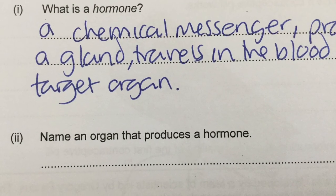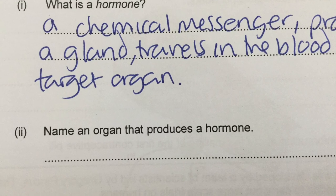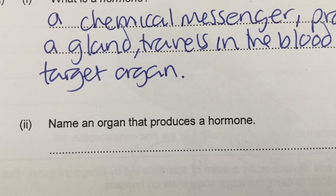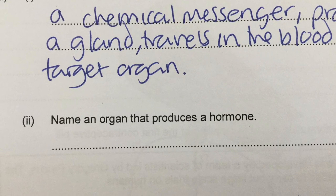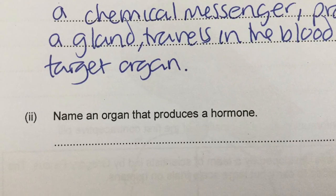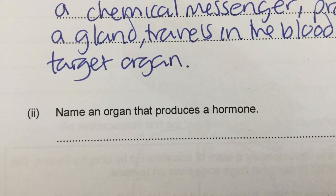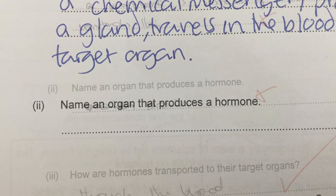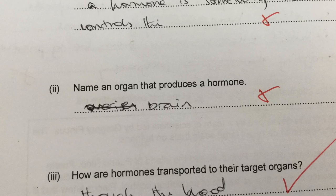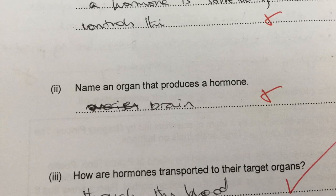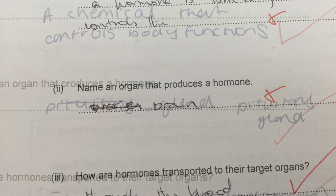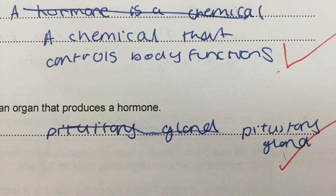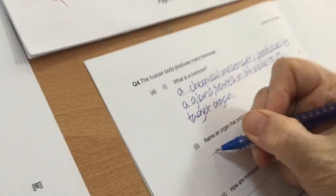The next question asks you to name an organ that produces a hormone. Any type of gland would have been accepted, apart from a salivary gland, because a salivary gland produces saliva which contains enzymes, which are not hormones. 'Brain' was insufficient — it should be more specific, such as the pituitary gland or the hypothalamus. Remember, spelling is ideal but not necessary if it reads phonetically correct.